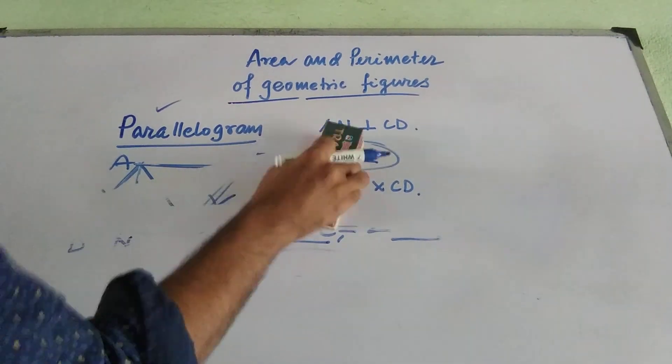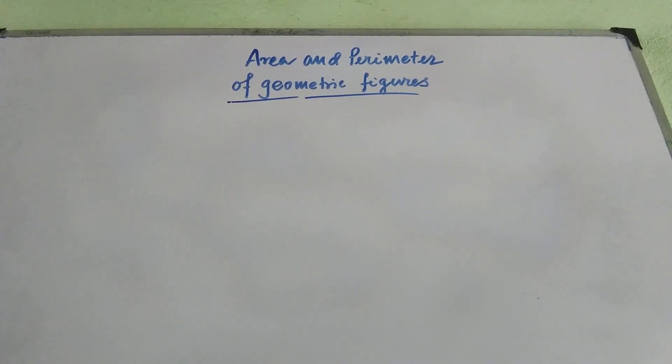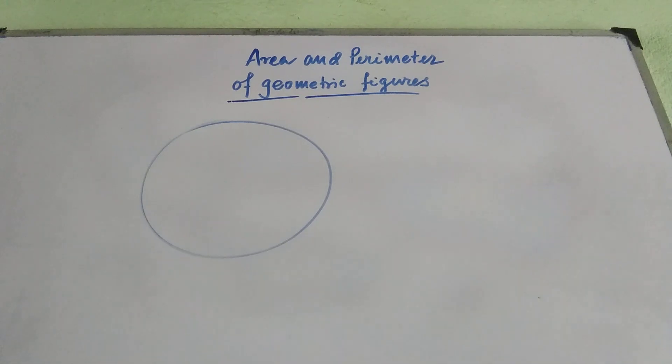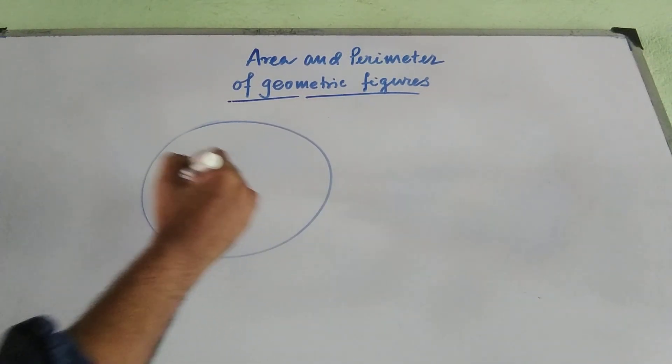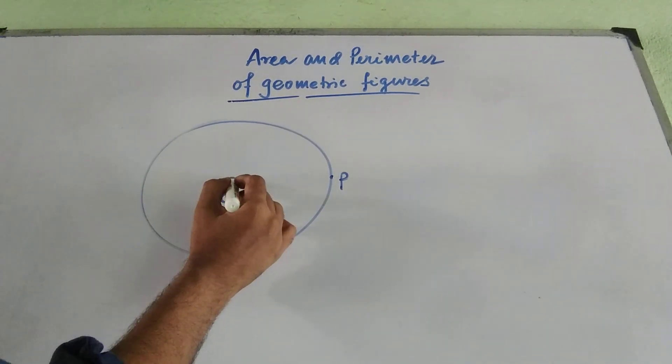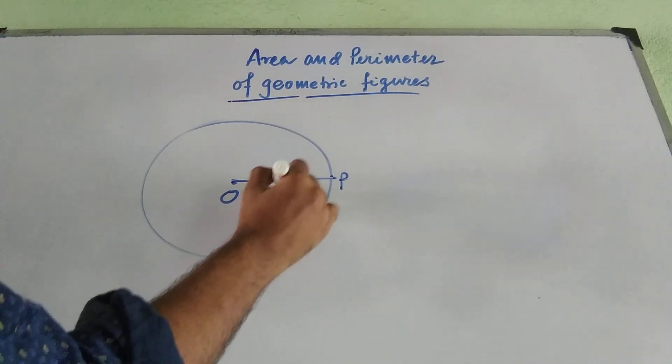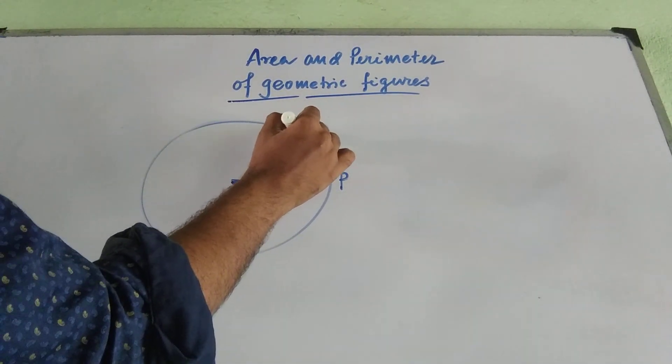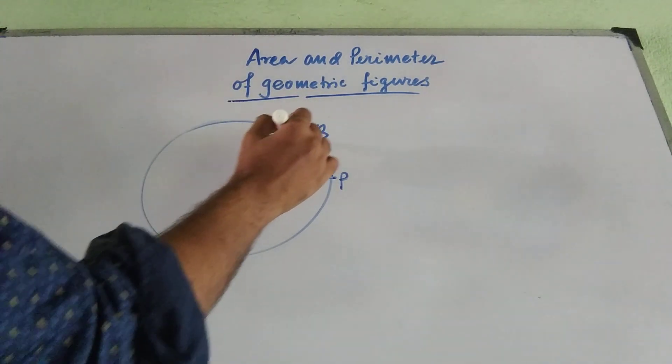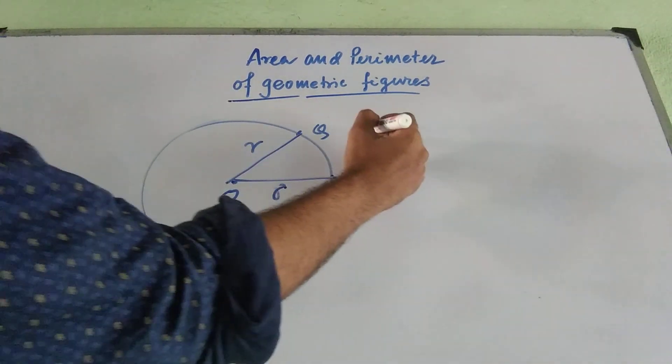So the last figure that I am going to discuss today is the area and perimeter of a circle. What is a circle? We everyone know what a circle is. Let the circle center be O and any point on the circumference of the circle be P. So you know, if I connect OP, that generates the radius of the circle, not only OP, but any point which is present on the circumference of the circle, let it be Q. Then OQ is also same as R, that is the radius of the circle.